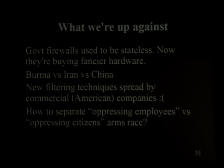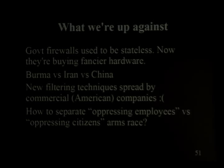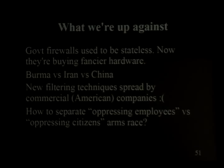I was talking to Whit Diffie about this, and he explained: make two categories — companies willing to sell stuff to countries they shouldn't, and companies that aren't — then publicize both lists and let the market decide. That might work, but the second list is empty. There are no companies that won't sell to any country happy to buy this stuff. The U.S. State Department has rules against selling to certain countries, but nobody enforces them. How did Iran get its Nokia boxes? They went through a European distributor — totally fine. There are so many loopholes I'm not sure how to resolve this from a societal pressure perspective.